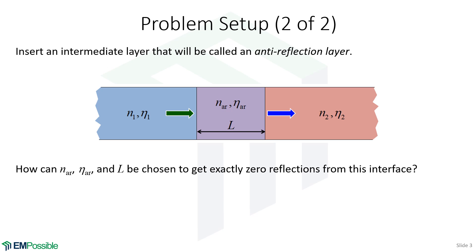Well, the simplest thing is, if we want to go from material one to material two, is put a layer between them of some other material. And we'll call this the anti-reflection layer that will have some refractive index, some impedance, and also some thickness with it. So now the problem is, how do we choose these numbers so that we can get exactly zero reflection from that interface?